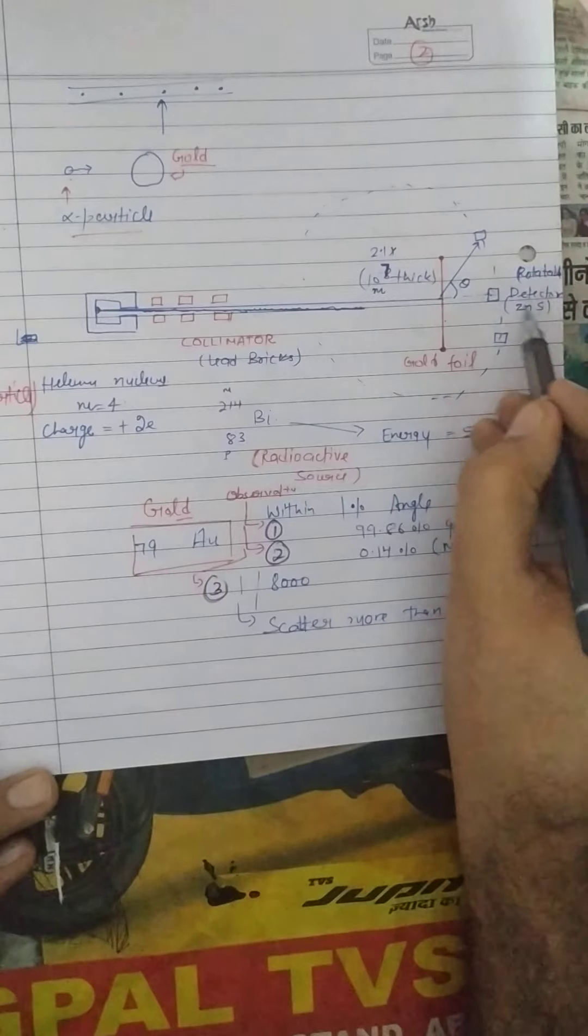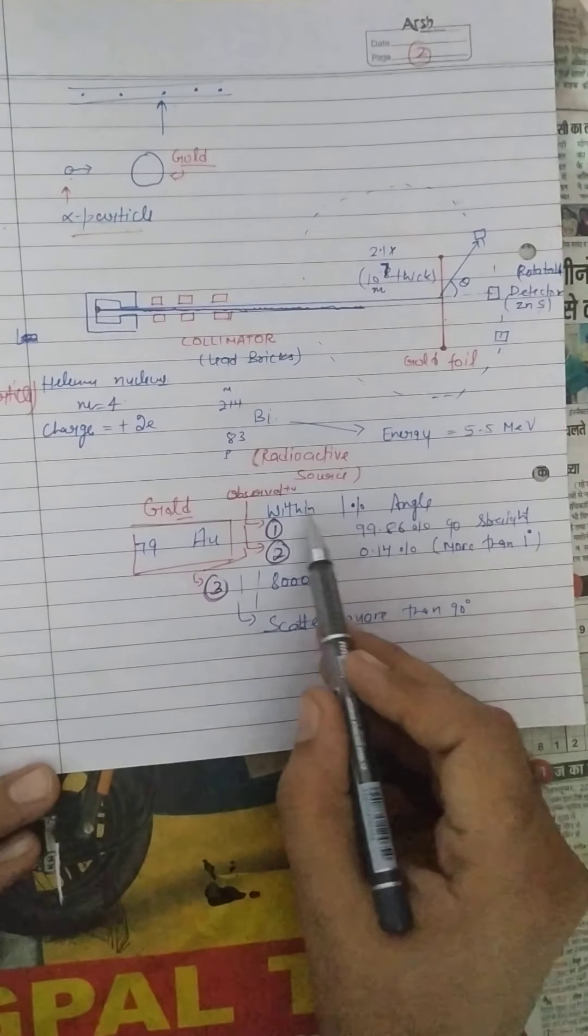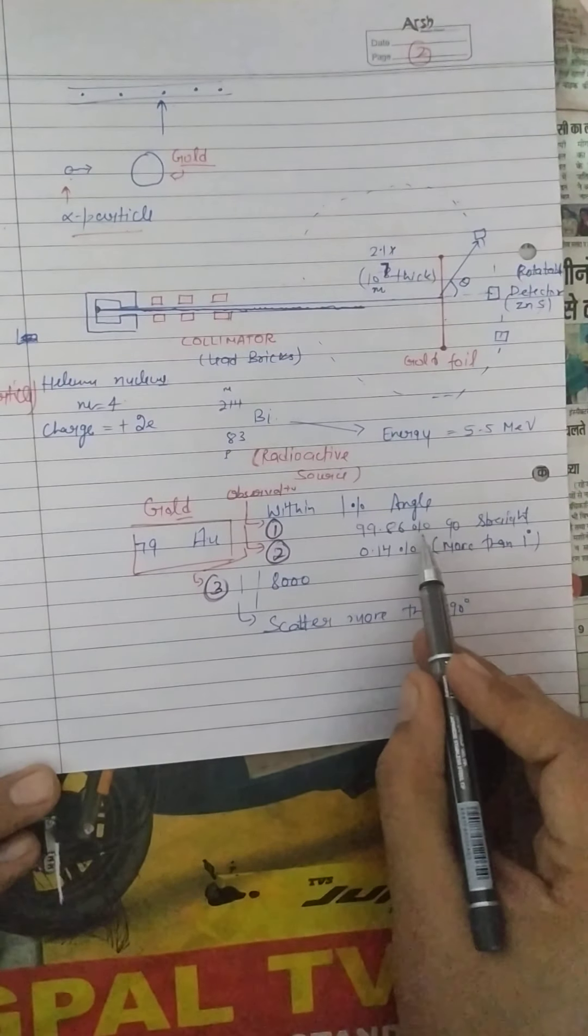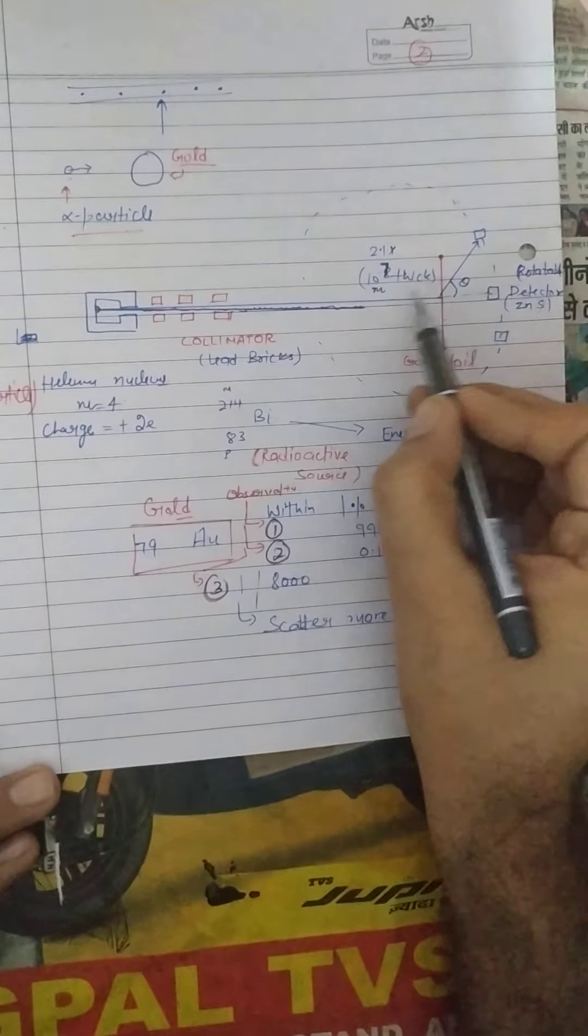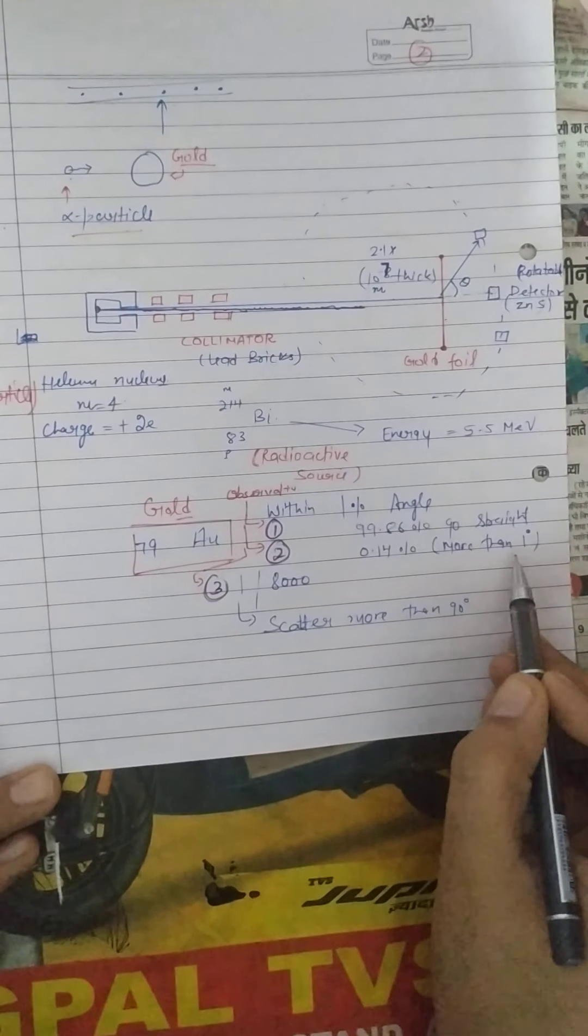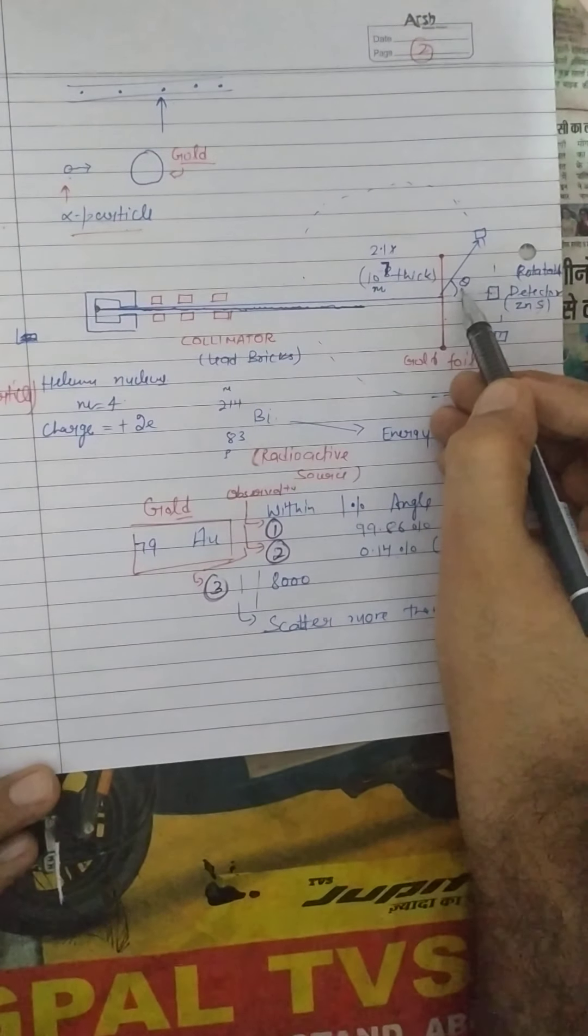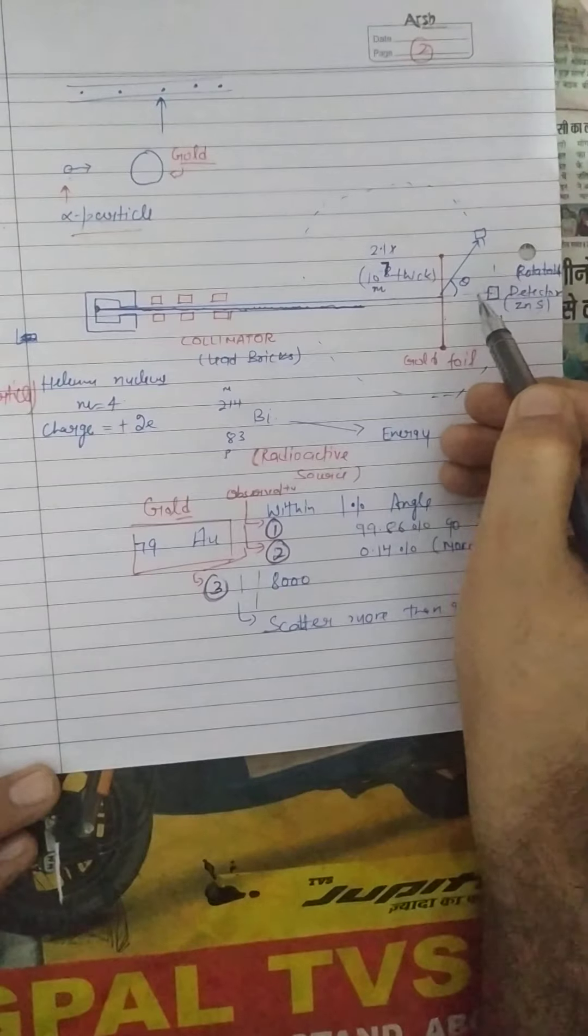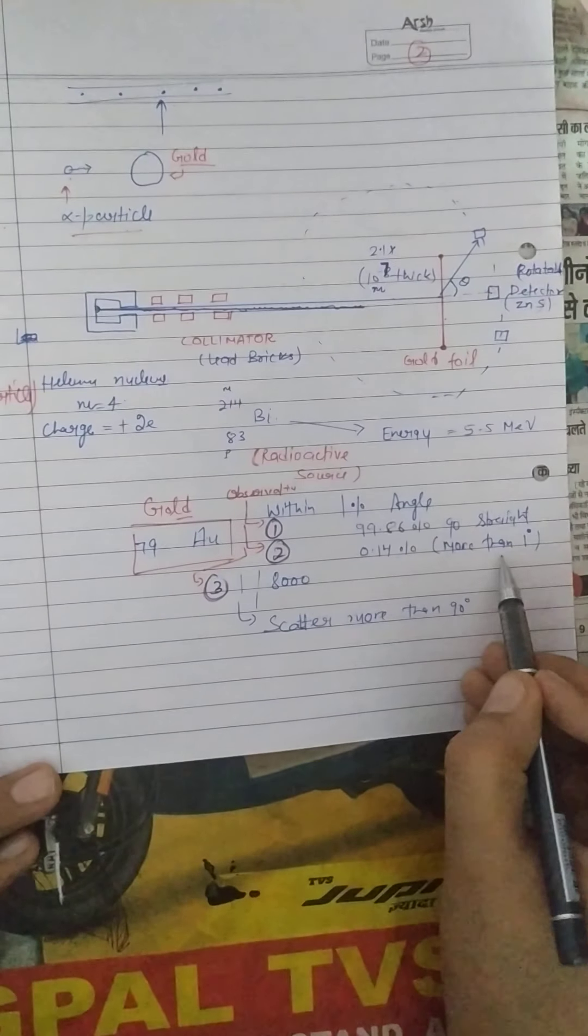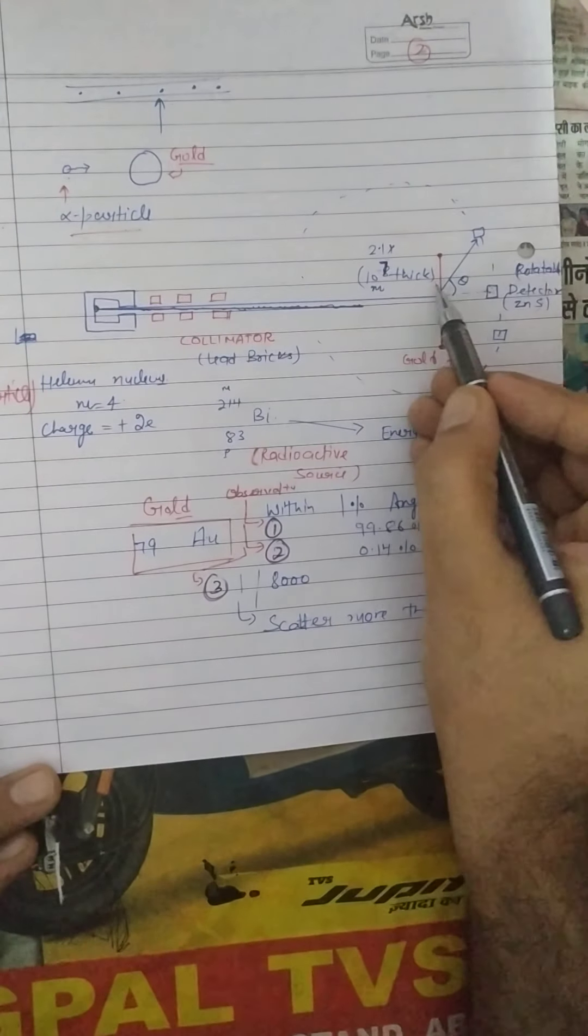This is the work of this particular detector. And after that, what is the observation given by that particular scientist? 99.86 percent goes straight with less than one degree deflection. 0.14 percent turns through more than one degree. That means approximately 100 particles go straight, but some particles turn through one degree, and that might go to 180 degrees.